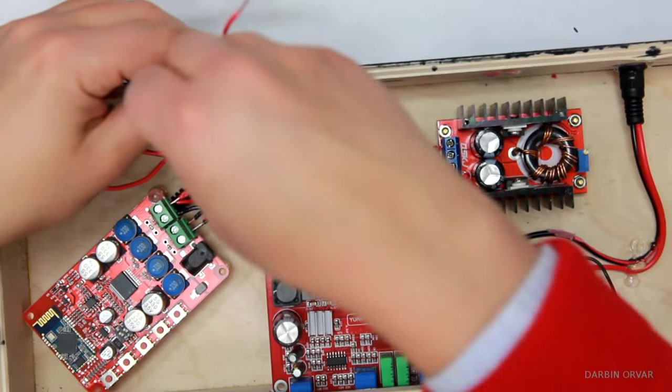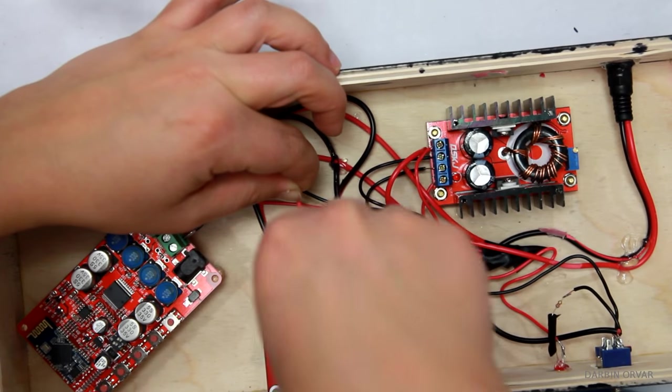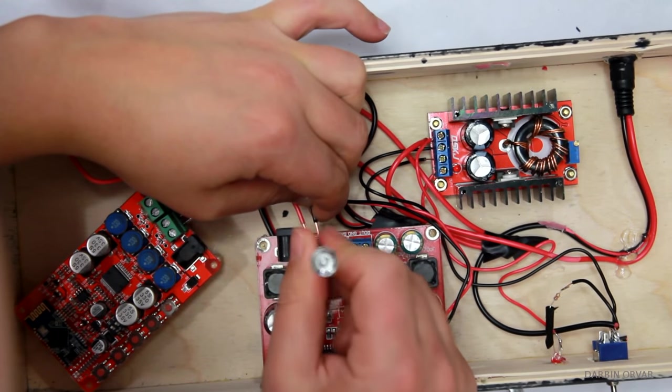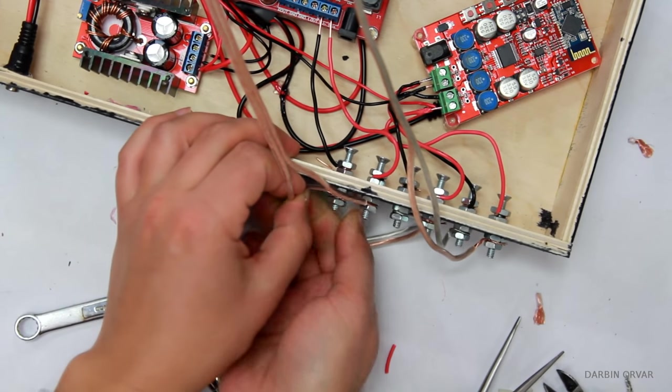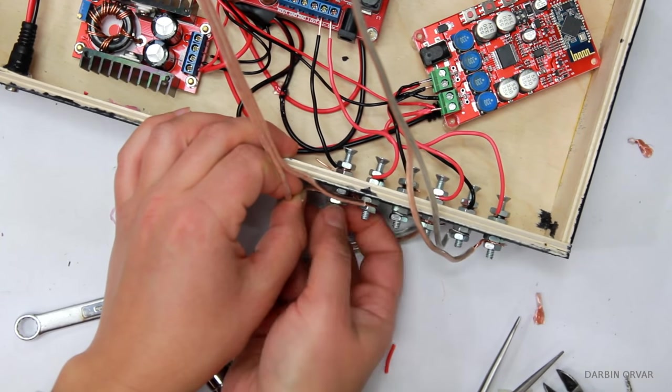And now connecting the wires here to the speaker nuts, and then connecting those wires to the amplifiers. And then connecting speaker wires on the other side and tightening the nuts.